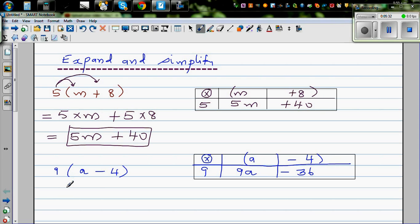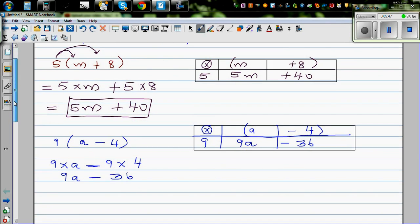If you want to do directly, this is 9 times a. You've got a minus sitting there. Minus 9 times 4. Which is 9a minus 36. One more example.